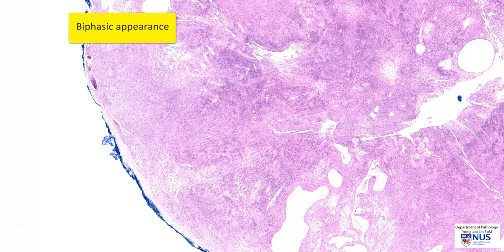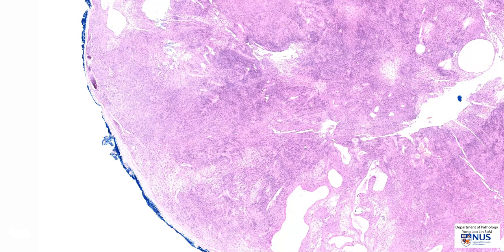Biphasic because there are areas that are more compact and cellular, and there are other areas that are much less cellular and have a more pale appearance on low magnification. Let's have a look at another section from the same tumor, which shows another feature of schwannoma.